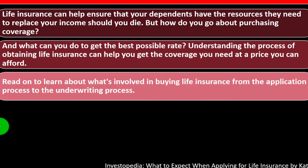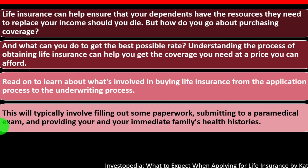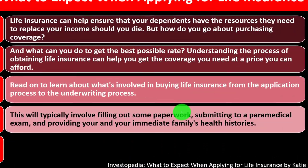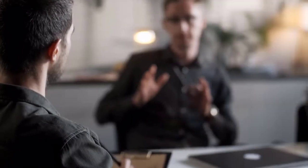Read on to learn about what's involved in buying life insurance — from the application process to the underwriting process. This will typically involve filling out some paperwork, submitting to a paramedical exam, and providing your and your immediate family's health histories. It's useful to have a general idea of what the insurance company is doing to think about what they'll likely ask for.